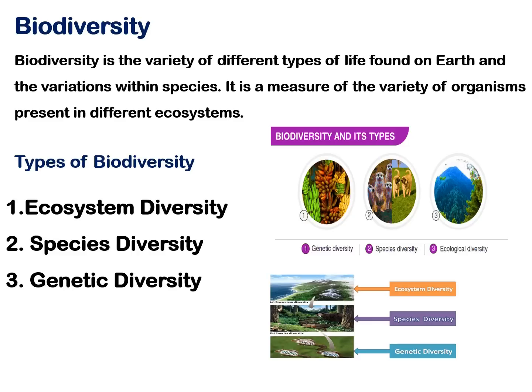Biodiversity refers to the variety of life forms found in an ecosystem or area. Biodiversity is classified into three types: ecosystem diversity, species diversity, and genetic diversity.